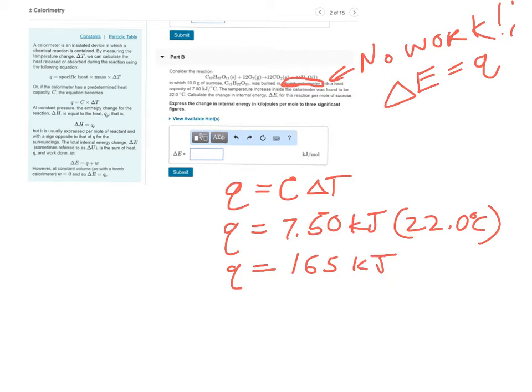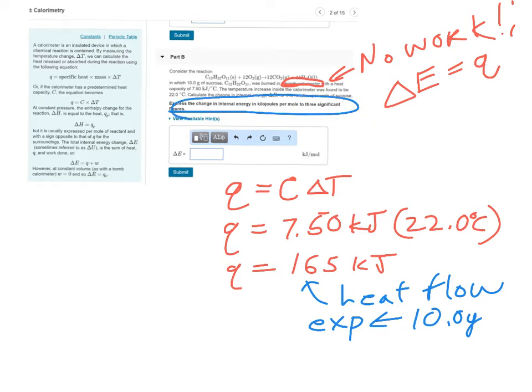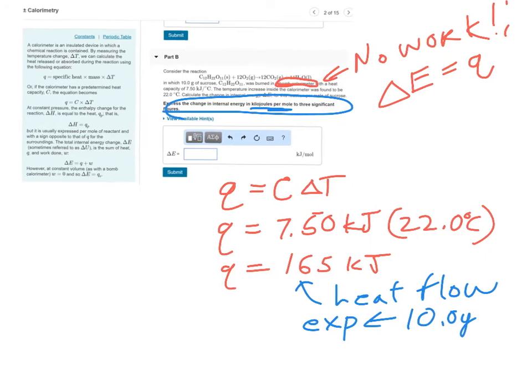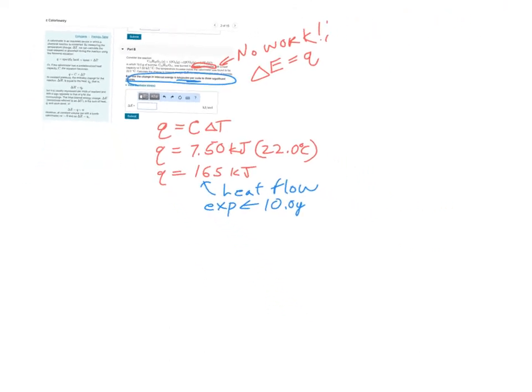Now, this is the heat flow from our actual experiment. And in our actual experiment, we used 10 grams. They're asking for the change in internal energy per kilojoules per mole. So, what we're going to have to do is we're going to have to do a little unit conversion here to convert our experimental results into something more universally useful.